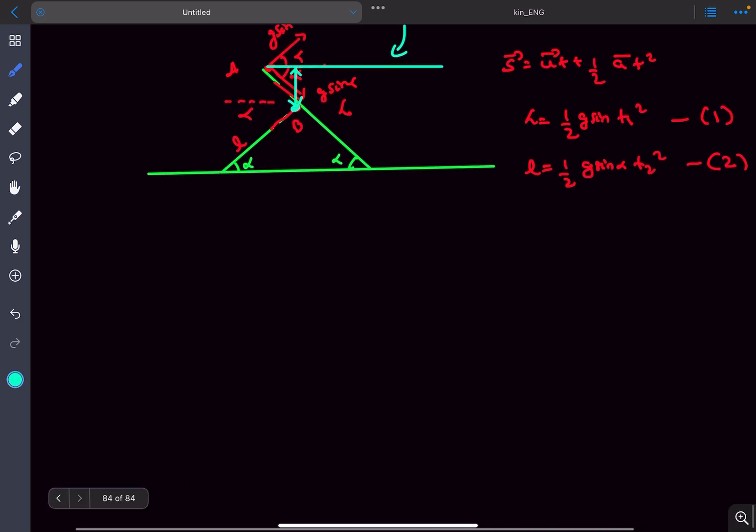I'm going to redraw the diagram. B will observe A to move along this horizontal line. This distance small d is going to be the minimum distance between them as this is perpendicular to the line of motion of A.